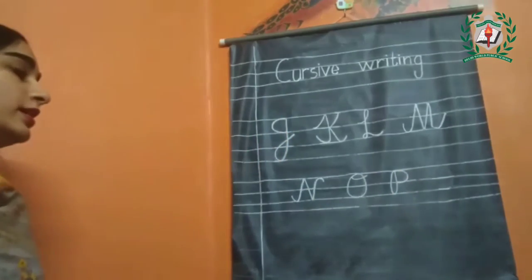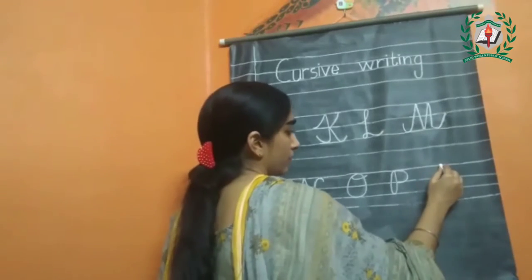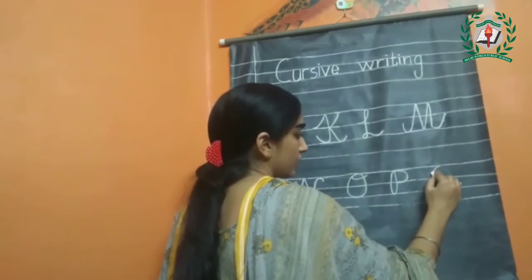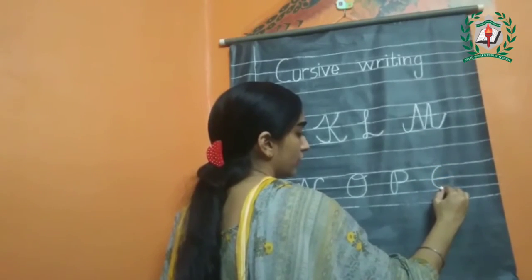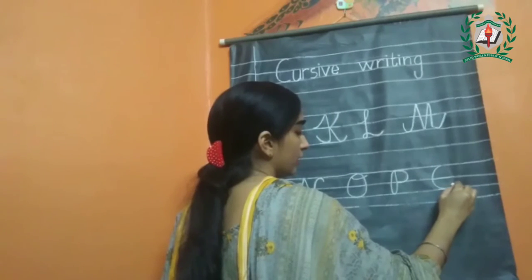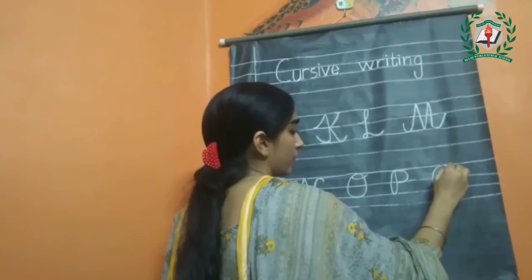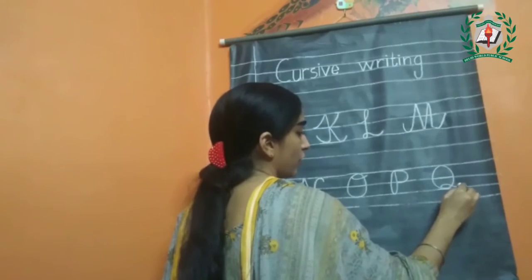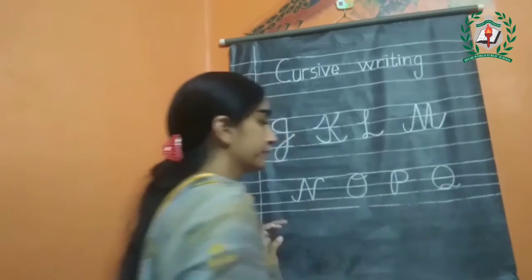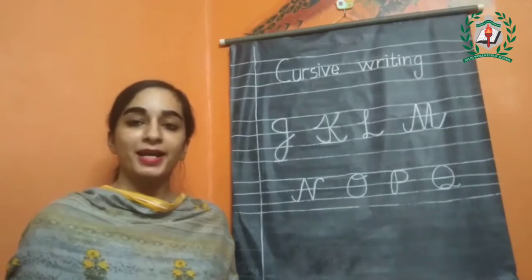Now the next letter is Q. Make a circle between the upper line and the baseline with a curve at the bottom. Practice this at home. Bye-bye.